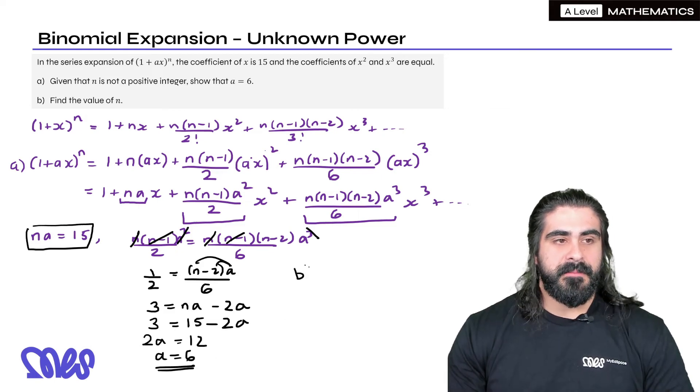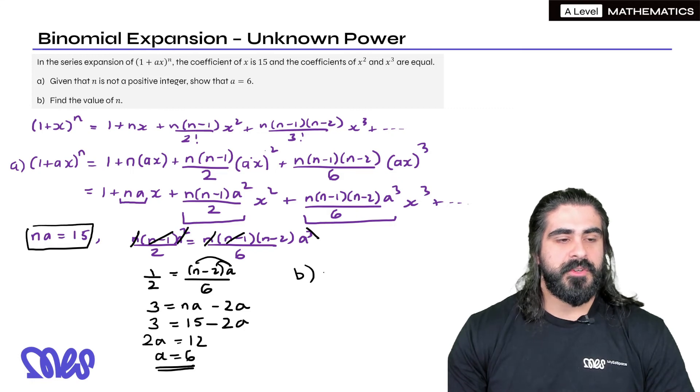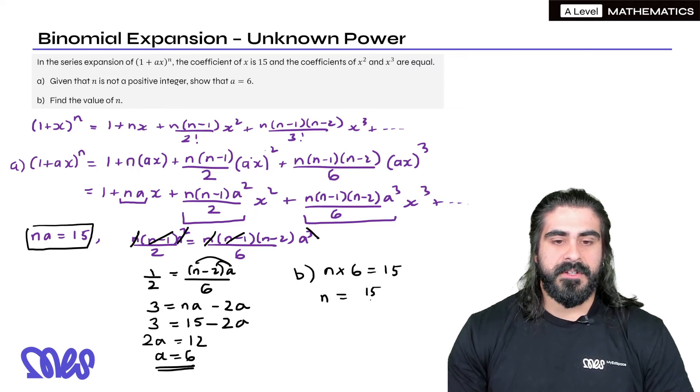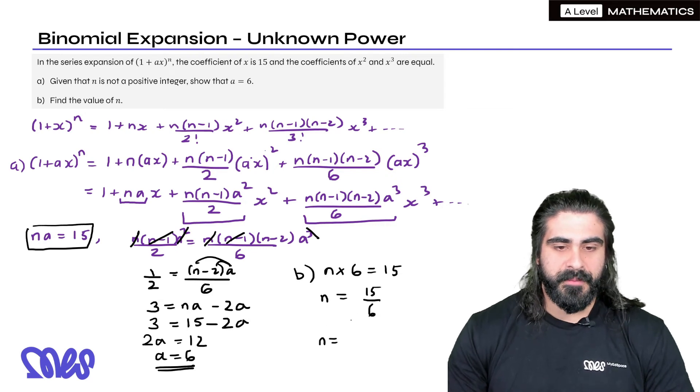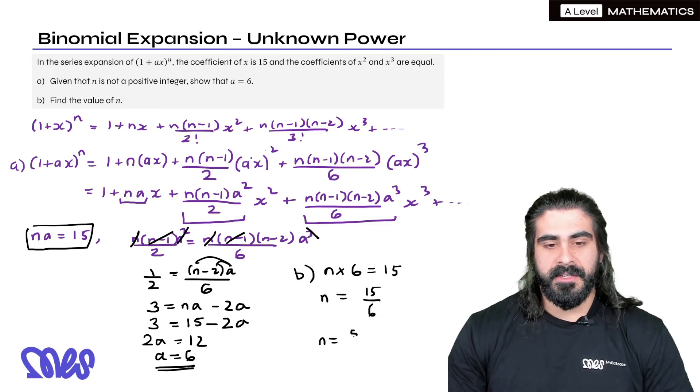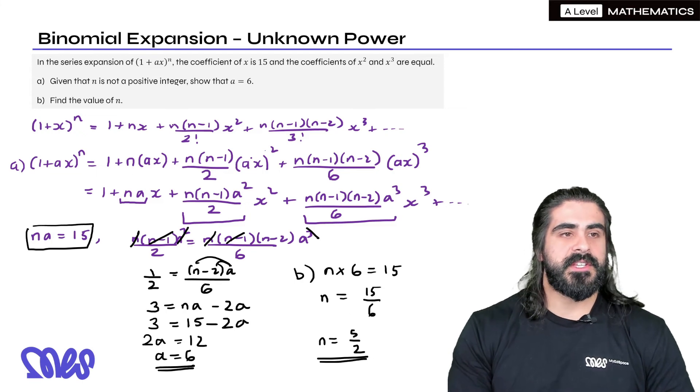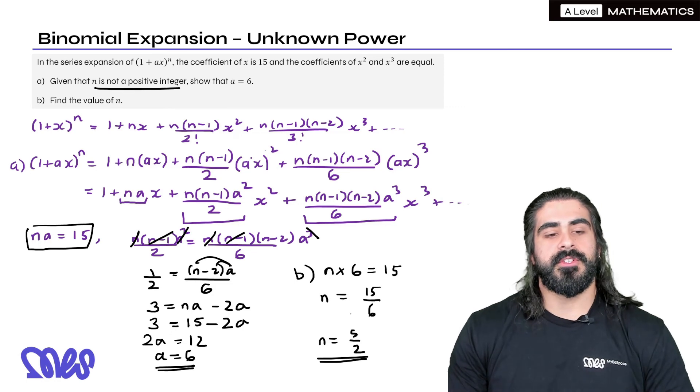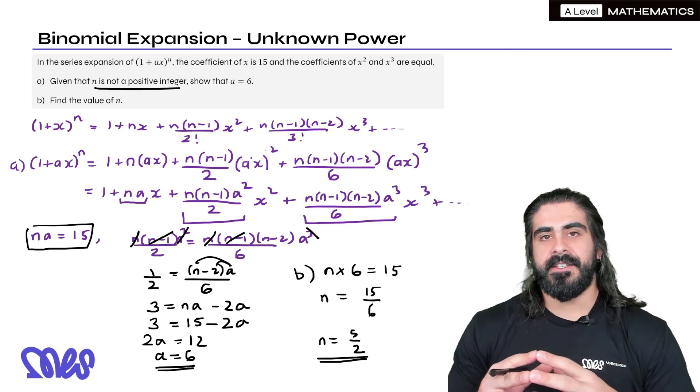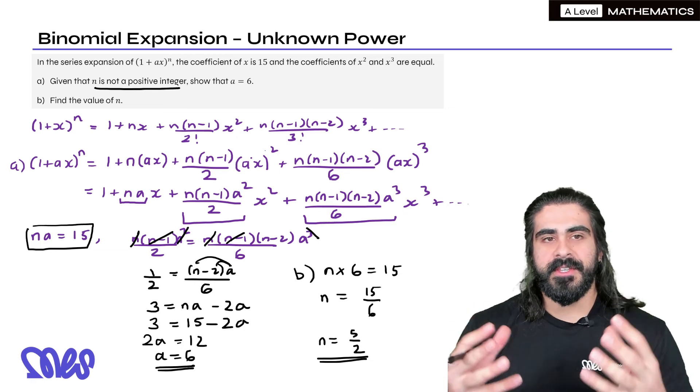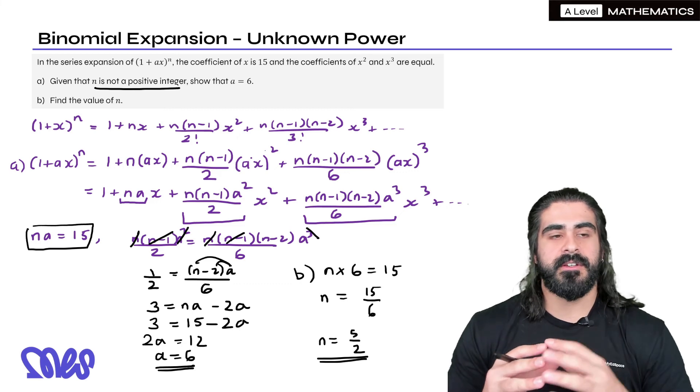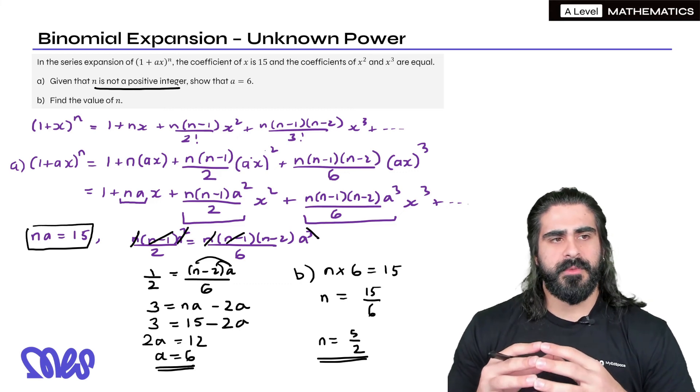Now that we know that a is 6, we can go to part b, find the value of n. And we're just going to replace a with 6. So it'll be n times 6 is 15. So n is 15 over 6. n, divide top and bottom by 3, you get 5 over 2. Now if you look at the question, it says n is not a positive integer. This is not an integer, so we're all good. So here it looks like a is 6 and n is 5 over 2. And that's how you answer this type of question where the power is unknown. You have to use the infinite expansion of the generic polynomial where the power is unknown.